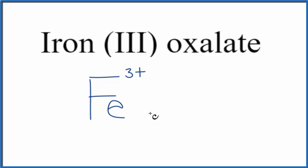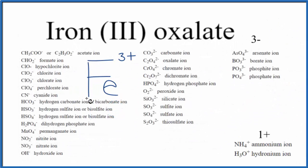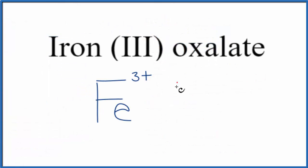Oxalate is one you might not see as often. We know that it's a polyatomic ion — it ends in -ate. If you haven't memorized the formula for the oxalate ion, you can look it up on a table of polyatomic ions. The oxalate ion is C₂O₄²⁻.